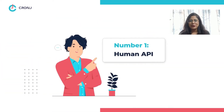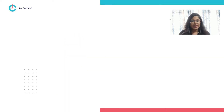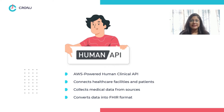Number one: Human API. Human API is an AWS-powered human clinical API that not only connects hospitals, patients, and labs, but also collects medical data from various sources and converts them into FHIR format.